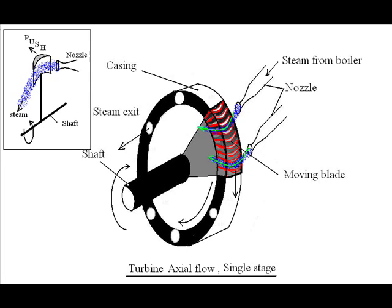Since the blades are connected to the shaft, the shaft rotates clockwise. Steam from the boiler enters the nozzle, where its pressure falls and velocity increases, gaining kinetic energy. This high-velocity steam then falls over the blades, pushing them. The blades, connected to the shaft, cause the shaft to rotate in the direction corresponding to blade movement. To summarize: steam enters the nozzle → pressure drops → kinetic energy increases → steam pushes blades → shaft rotates.